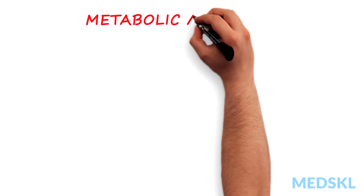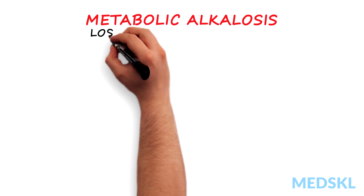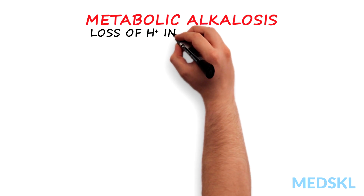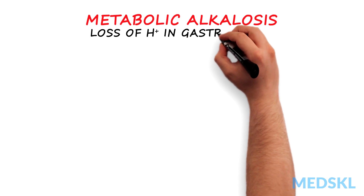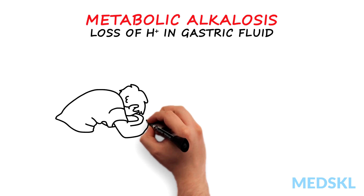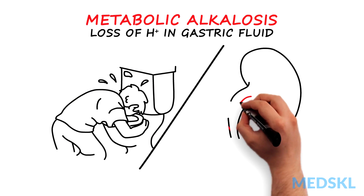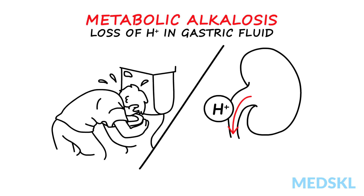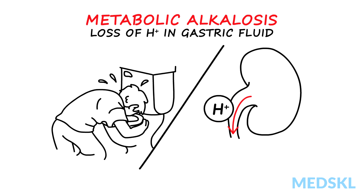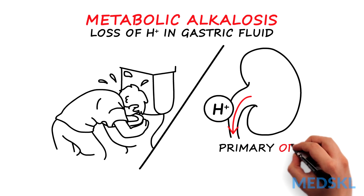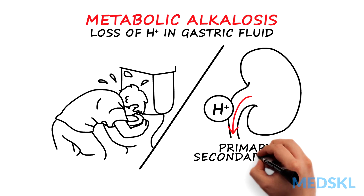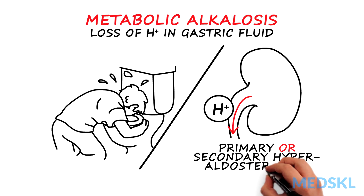Metabolic alkalosis is caused by the loss of hydrogen ion in gastric fluid, which occurs with vomiting, or the loss of hydrogen ion from the kidney seen with either primary hyperaldosteronism or secondary hyperaldosteronism associated with diuretic use.